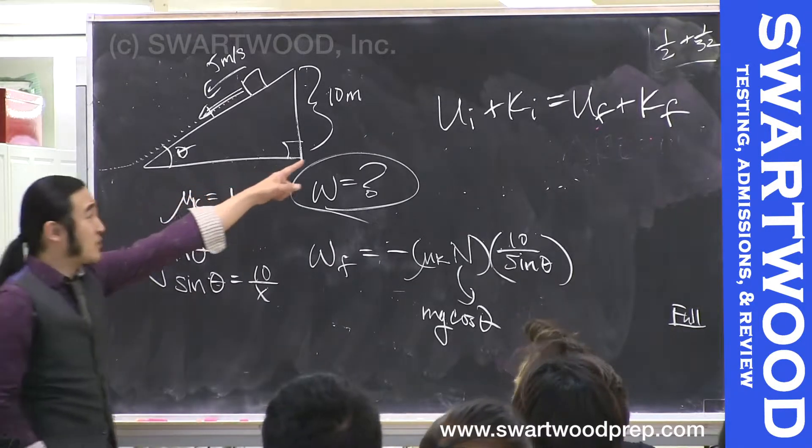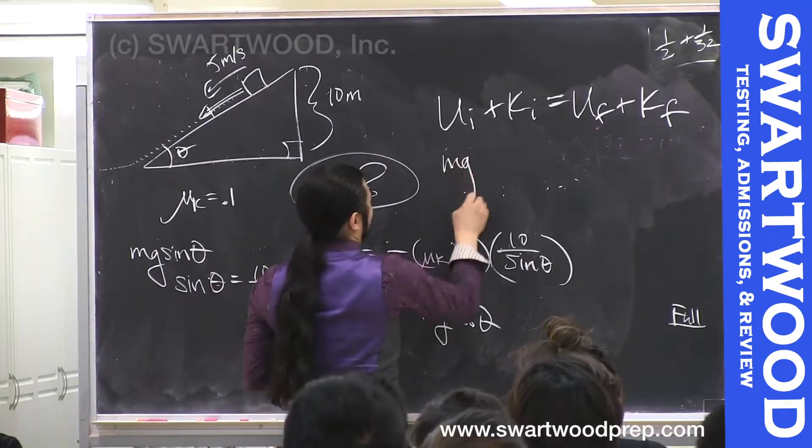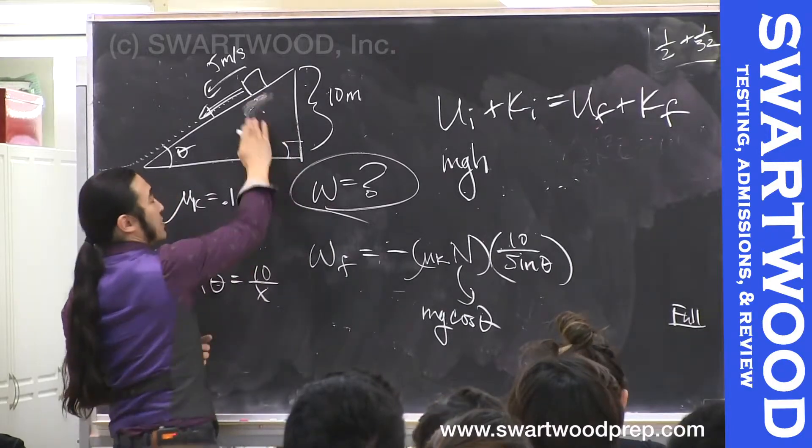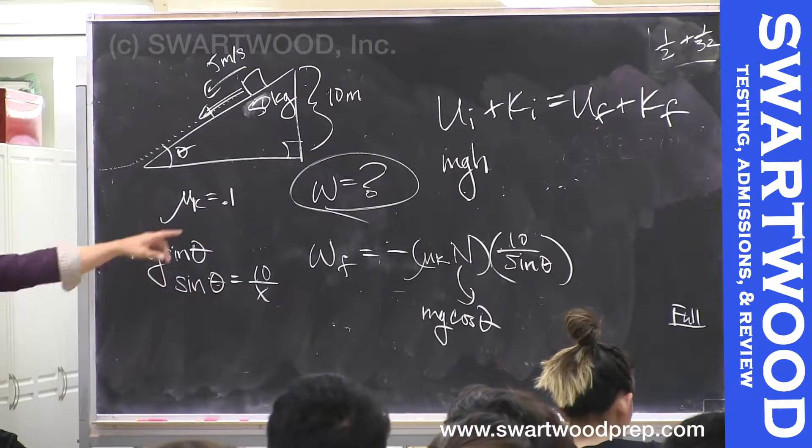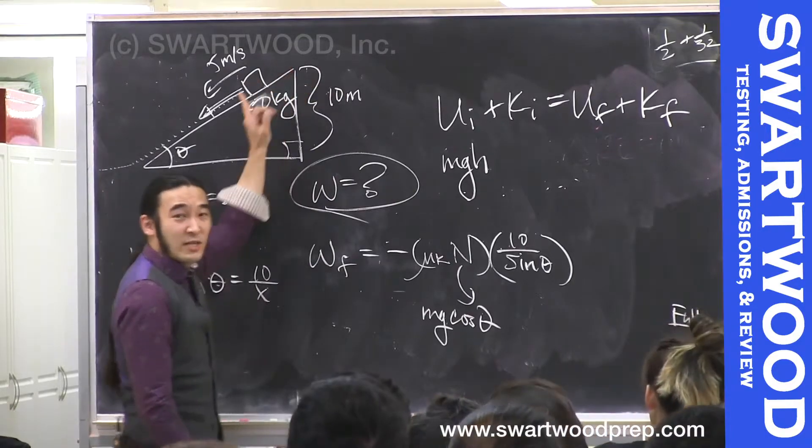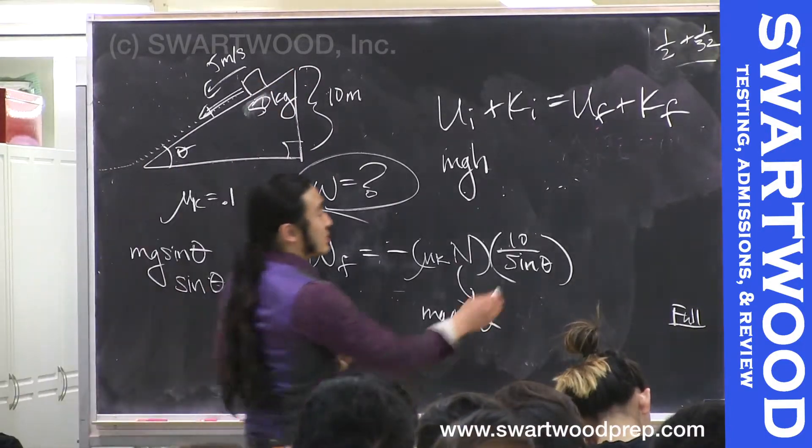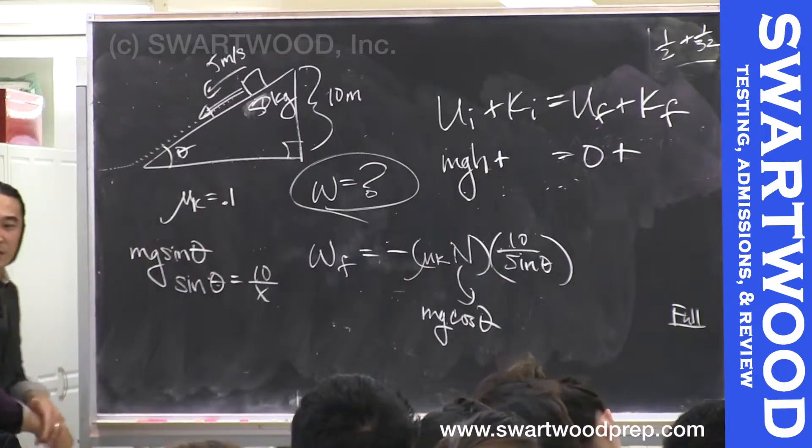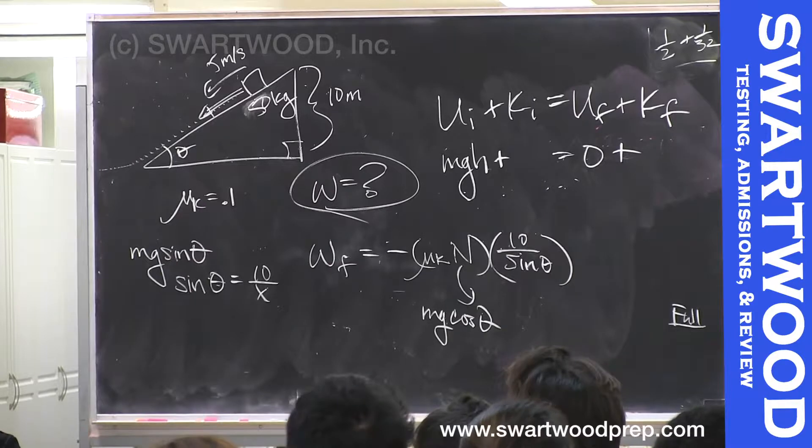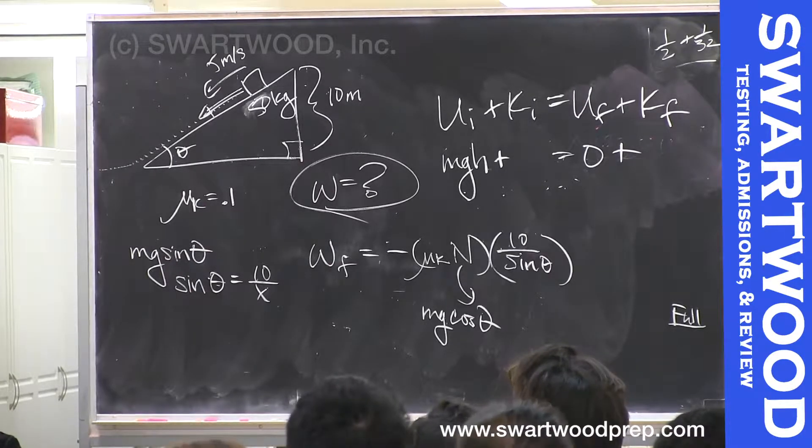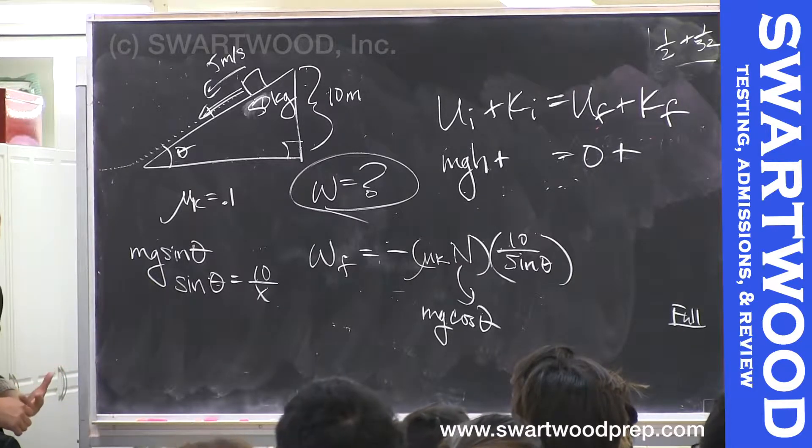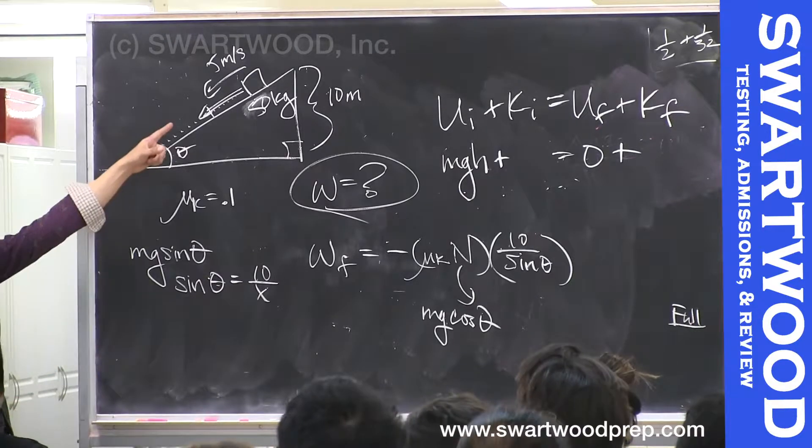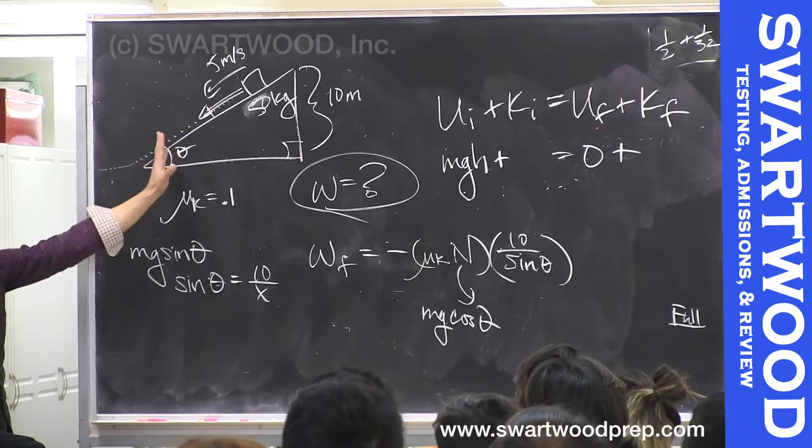I'm going to start with conservation of energy because I have no idea how to do this. I'm going to always try to go energy first. The height, the potential energy, is nice. Isn't that just mgh? I should give you a mass. Somebody give me a mass. Fifty, okay. So I get this guy. At the top it's mgh. At the bottom it's zero. So that's nice.